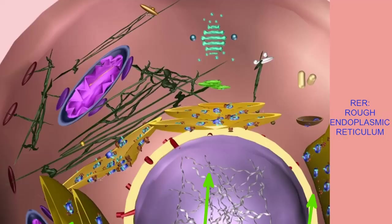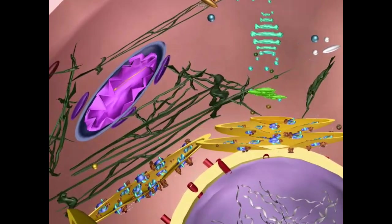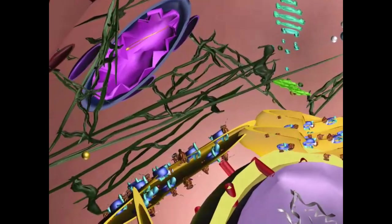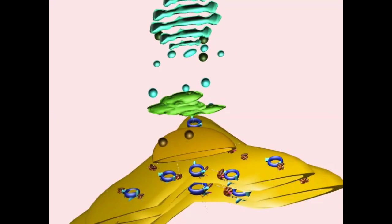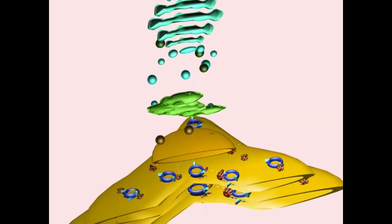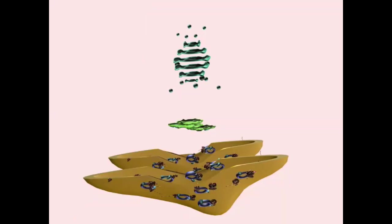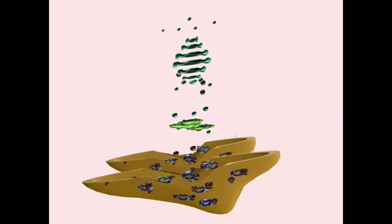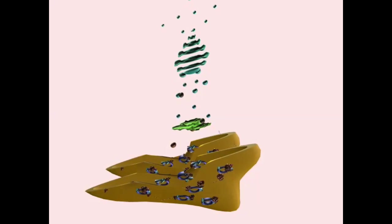These are transported to ribosomes at the RER. From the RER, proteins are commonly shipped to other compartments throughout the cell. The membrane system inside the cell is quite dynamic — vesicles form and move from the RER to the ERGIC, the ER to Golgi Intermediate Compartment, and from there to the Golgi.